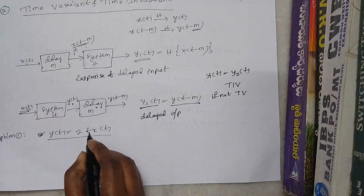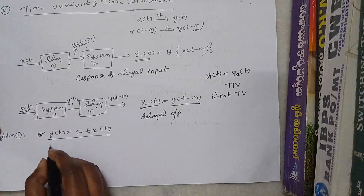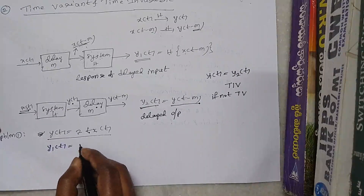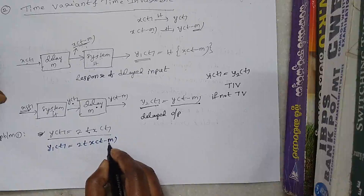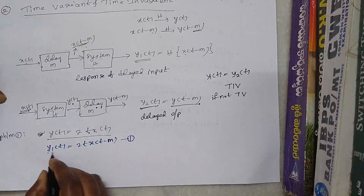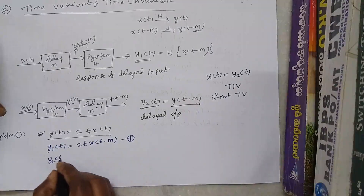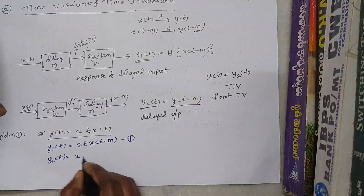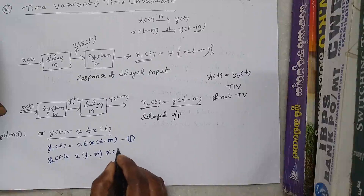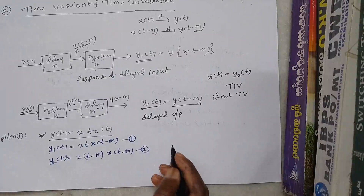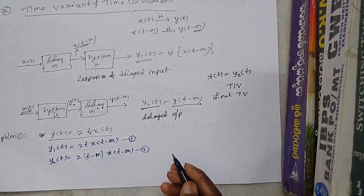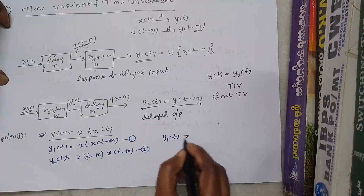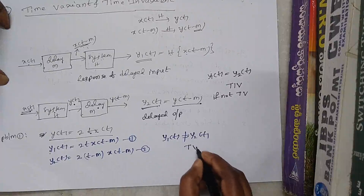Let us check with this example: if y(t) = 2t·x(t), then y1(t) is the response of the delayed input, where only the input is delayed — this is equation 1. And y2(t) is the delayed output, where the entire output is delayed, including the time variable, giving 2(t-m)·x(t-m). Since y1(t) is not equal to y2(t), such a system is called time variant.